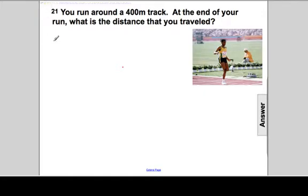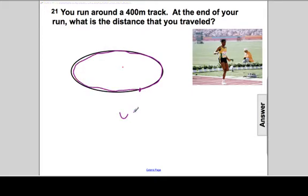So if we consider a track, let's draw a track, which is going to be an oval. If I draw an oval, let's just call this the track, we'll call it an oval track. If we start at some location, we'll say here, and we run all the way around, we would have run a distance of 400 meters.